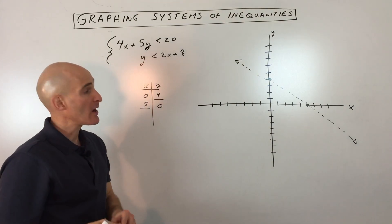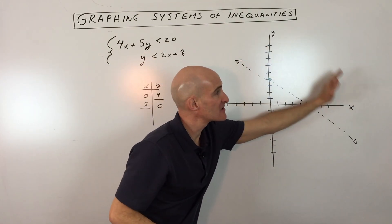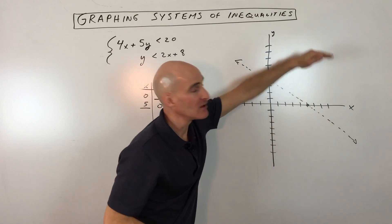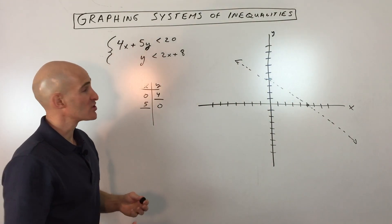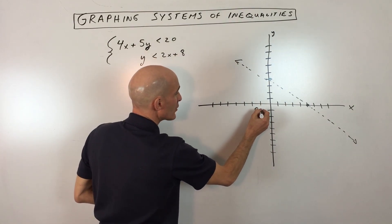Now the next thing we want to do is we want to decide are we going to shade this side of the line or are we going to shade this side of the line? Which side of the plane is going to be the solution set? Well, when it's in the standard type form, what you can do is just pick a test point and use the test point method.